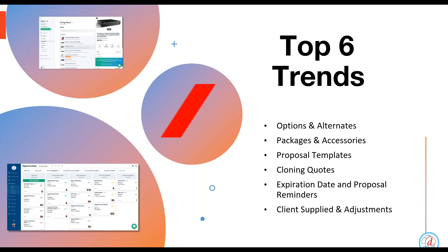Last, we'll focus on client-supplied items. We know that in certain projects there are products the client is providing or supplying, but you still want to charge them for labor. That's a big part of why you are in business, as well as making a global adjustment on particular projects — whether you want to give a particular client a discount globally, or perhaps mark up all the products in that project without making any edits to your catalog.